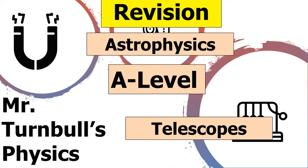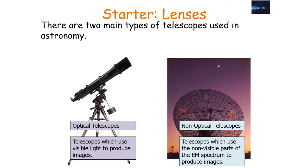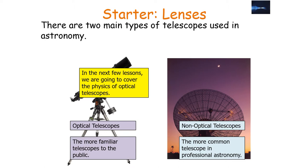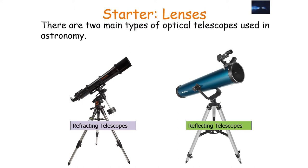Hello, and in today's revision session we're going to look at the A-level astrophysics option topic with a subsection on telescopes. There are two main types of telescopes used in astronomy: optical telescopes, which use visible light to produce images, and non-optical telescopes, which use non-visible parts of the electromagnetic spectrum. Optical telescopes are more familiar to the general public, whilst the more common telescopes in professional astronomy are non-optical telescopes.